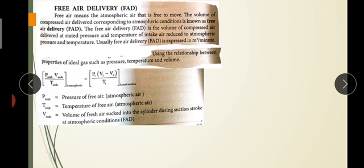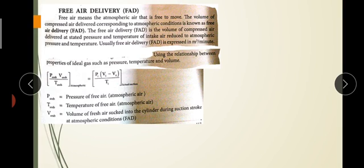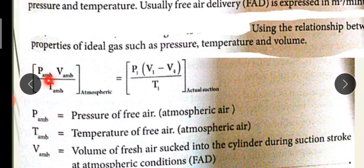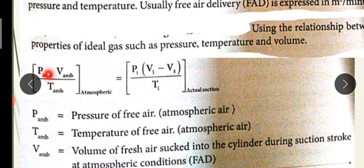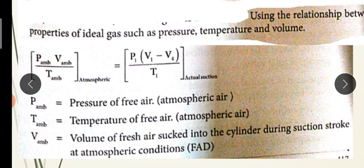We need to get a pressure-temperature-volume relation. This means ambient condition — ambient means atmospheric condition. Pressure at ambient, volume at ambient, temperature at ambient — that is the atmospheric condition pressure-volume-temperature, which is equal to actual condition pressure-volume-temperature.